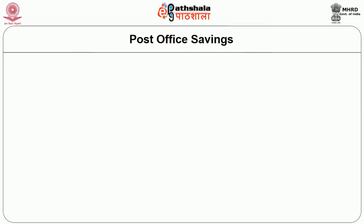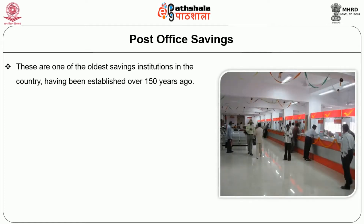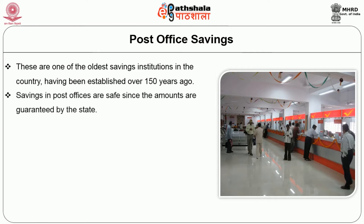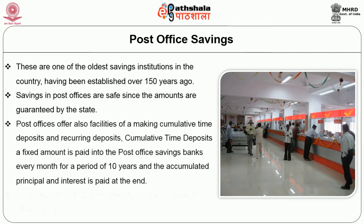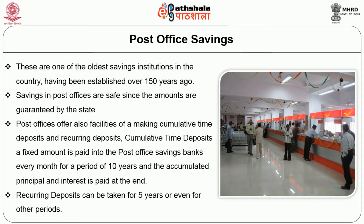The second type is post office savings. They are one of the oldest savings institutions in the country, having been established over 150 years ago. Savings in post offices are safe since the amounts are guaranteed by the state. Post offices also offer the facility of making cumulative time deposits and recurring deposits. Cumulative time deposits involve a fixed amount paid into the post office savings bank every month for a period of 10 years, and the accumulated principal and interest is paid at the end. Recurring deposits can be taken for 5 years or even further periods.